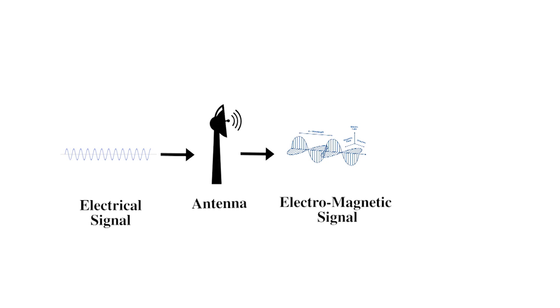In radio communications, the electrical signals are converted into electromagnetic waves by using a device called antenna when radio transmission and reception are used for distance communication.